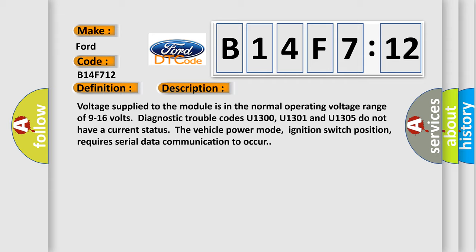Voltage supplied to the module is in the normal operating voltage range of 9 to 16 volts. Diagnostic trouble codes U1300, U1301, and U1305 do not have a current status. The vehicle power mode, ignition switch position, requires serial data communication to occur.